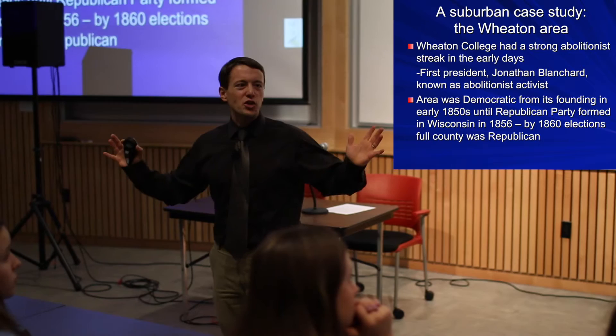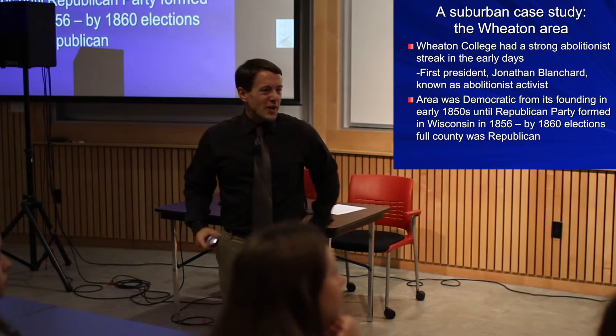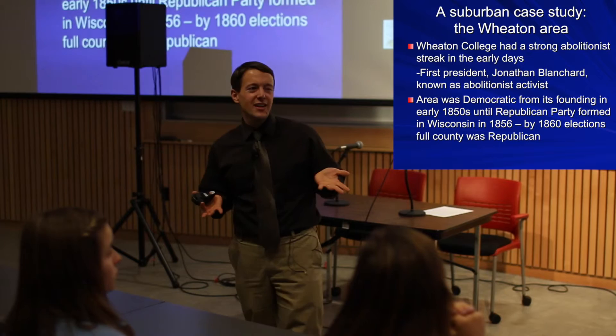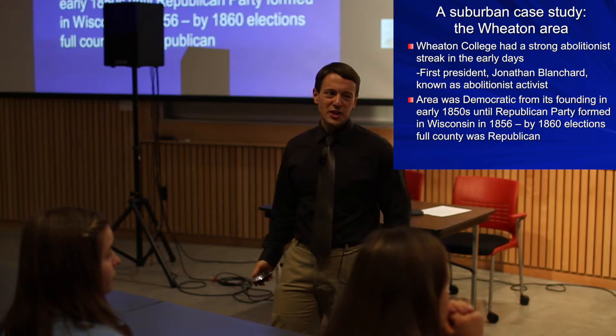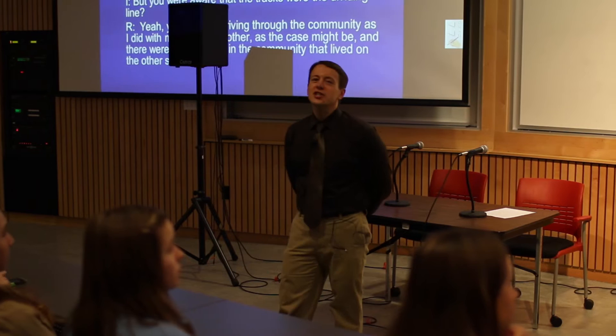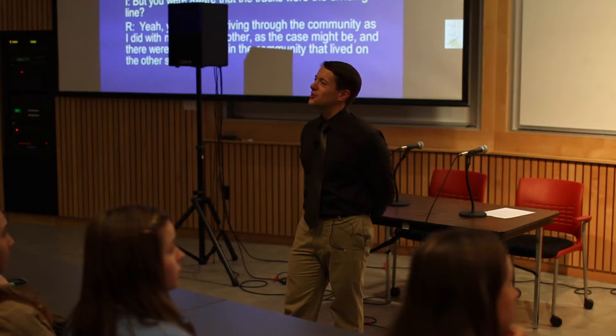Now we get to Wheaton. Wheaton has this early streak of abolitionism, and it's interesting that this wasn't limited to the college — it was a county-wide phenomenon. The Republican Party was founded in 1856 in Wisconsin, and by 1860 basically everybody holding office in DuPage County was Republican. What it meant to be Republican in the 1850s was largely abolitionism. And Wheaton was one of the only Chicago suburbs that had any black residents at all — in the 1870 census you can find 13, in 1910 you can find 43.